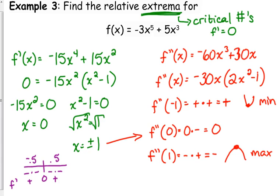Relative extrema occur at the critical points where the sign changes. Let's find f of negative 1: negative 3 times negative 1 to the fifth plus 5 times negative 1 to the third...